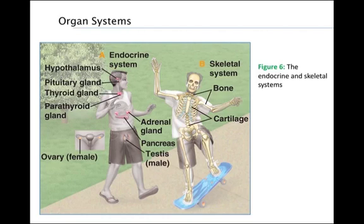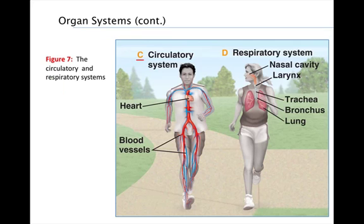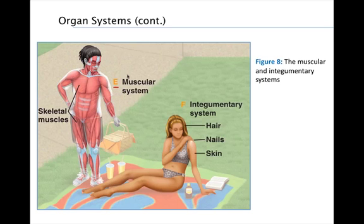We will now move on to the various organ systems. The endocrine system secretes chemicals called hormones that regulate body activities, and consists of all the glands. The skeletal system supports the body, protects certain internal organs such as the brain and lungs, and provides a framework for muscles to produce movement. The circulatory system is responsible for transporting nutrients and oxygen to body cells. The respiratory system is responsible for supplying the body with oxygen and also functions in disposing carbon dioxide. The muscular system consists of all the skeletal muscles and functions in producing movement, maintaining posture, and producing heat.